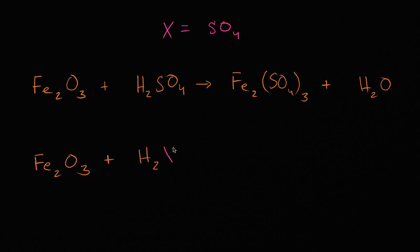H2 and then X is going to yield ferric sulfate. Ferric sulfate has three sulfate groups. So X is a sulfate group, it's going to have three of them. Ferric sulfate plus molecular water.